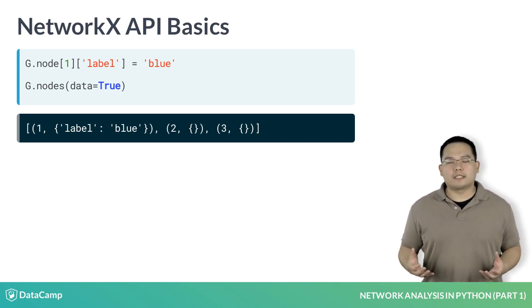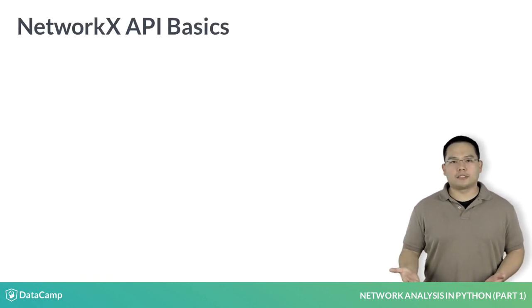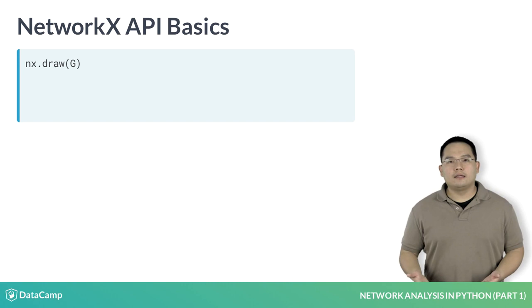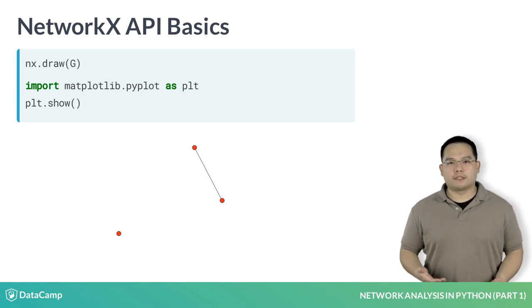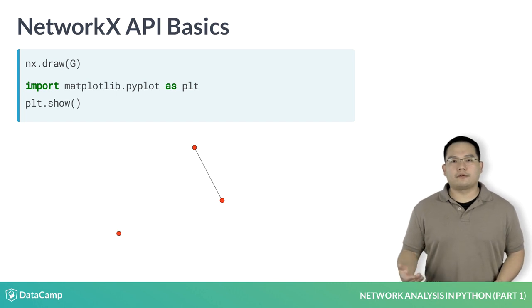NetworkX also provides basic drawing functionality using the nx.draw function. nx.draw takes in a graph G as an argument. In the IPython shell, you will also have to call the plt.show function in order to display the graph to screen. With this graph, the nx.draw function will draw to screen what we call a node linked diagram rendering of the graph.